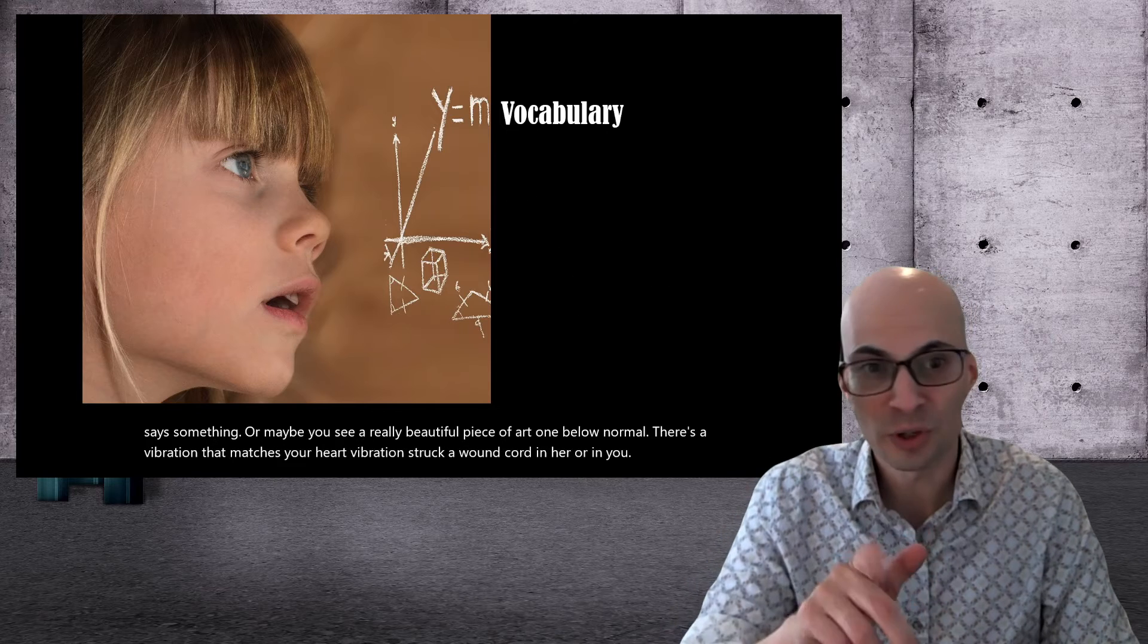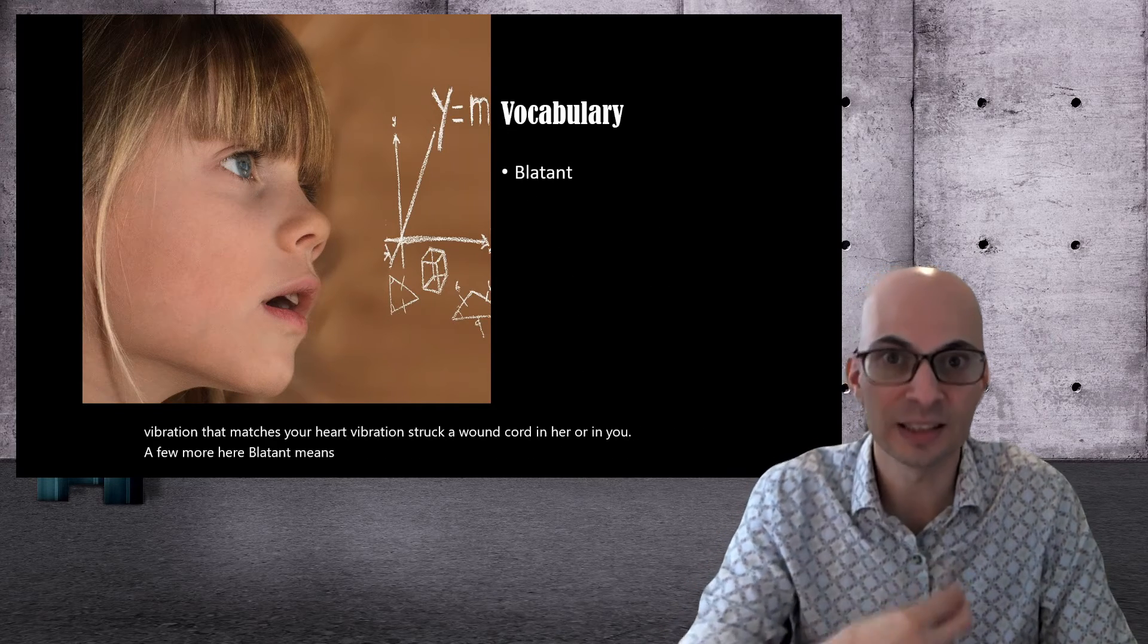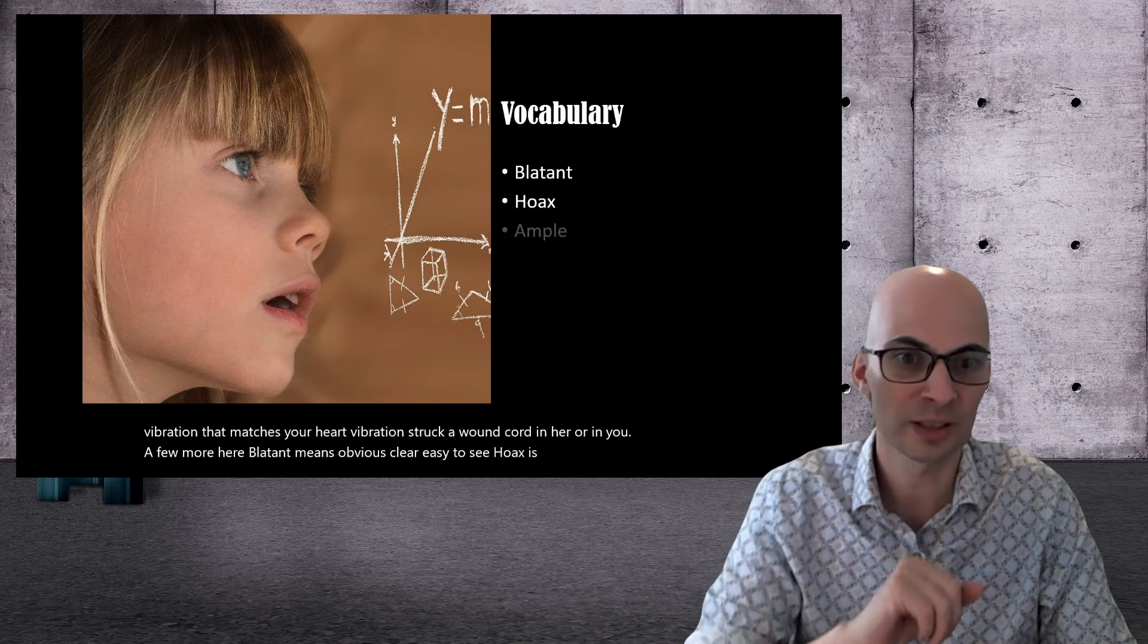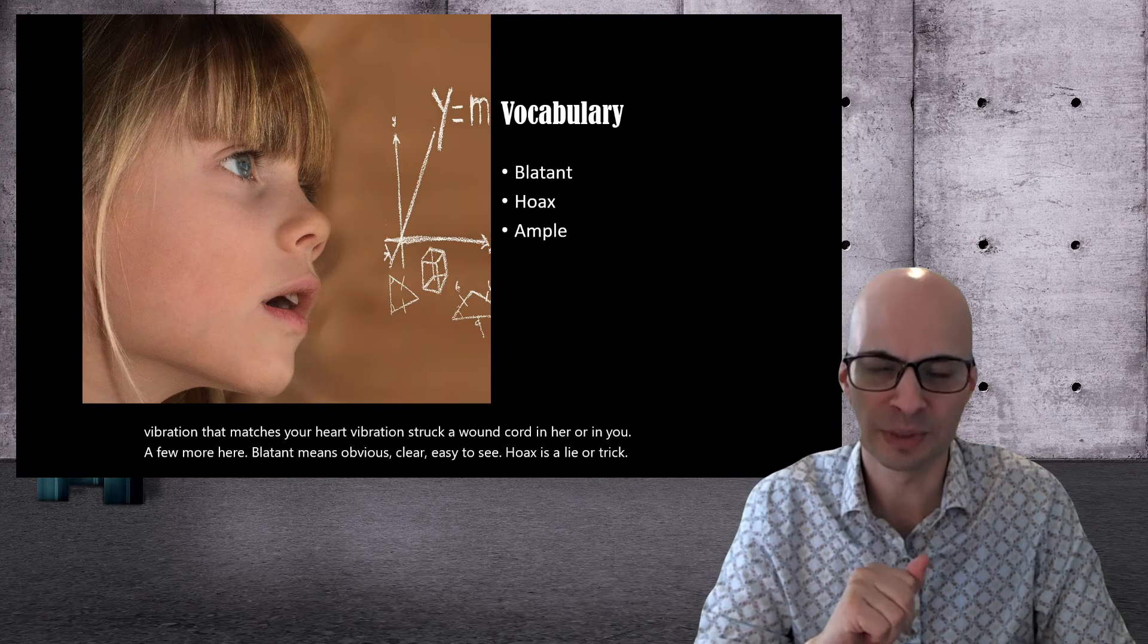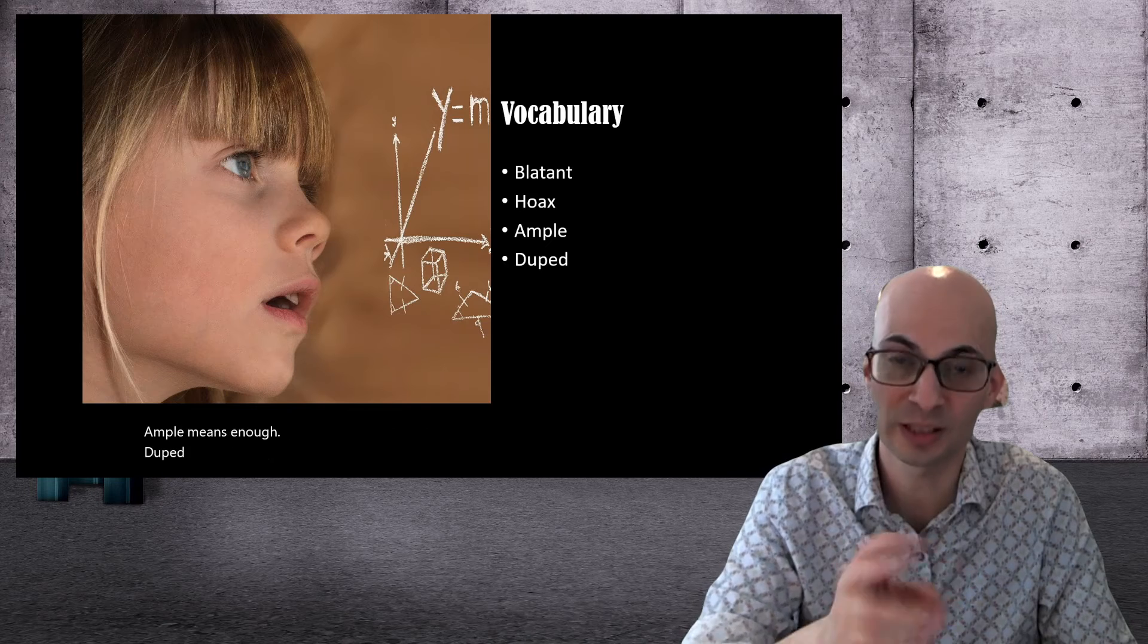A few more here. Blatant means obvious, clear, easy to see. Hoax is a lie or trick. Ample means enough. Duped is also like tricked.